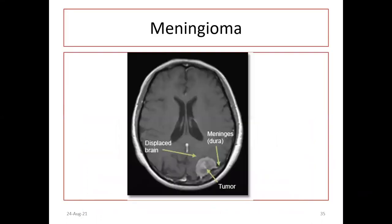If you see a meningioma, it is an extra-axial tumor, highly enhancing or brilliantly enhancing mass lesion, usually dural-based. This is the meningioma, this is the dura, and this is the displaced brain — it is mostly an extra-axial tumor.